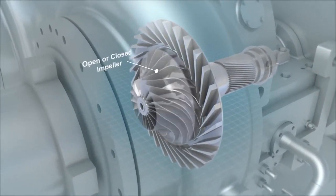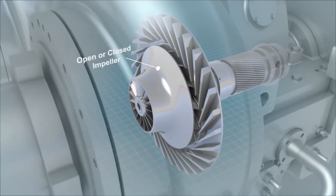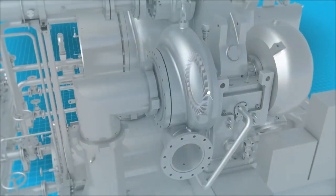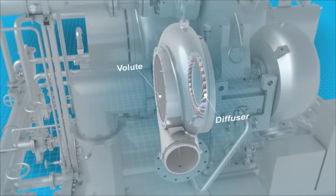Our impellers, available in open or closed configurations, impart kinetic energy to the gas. This is turned into pressure in the diffuser, and then the volute.